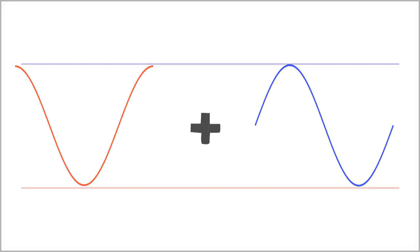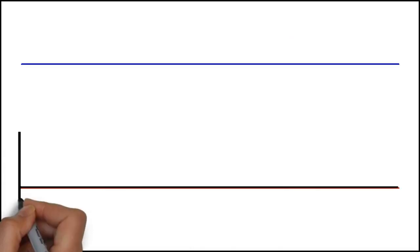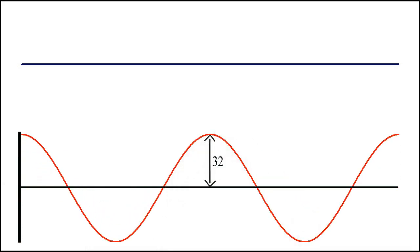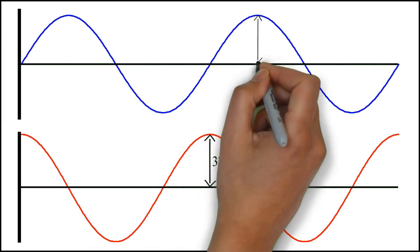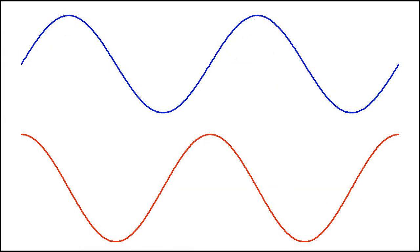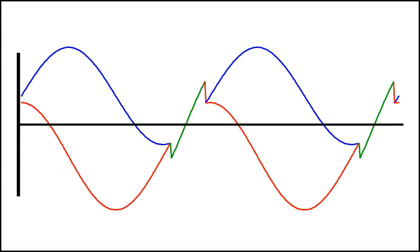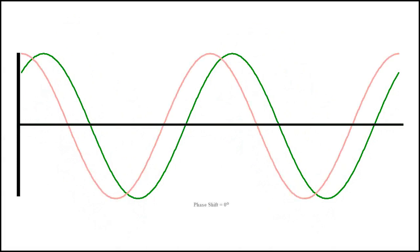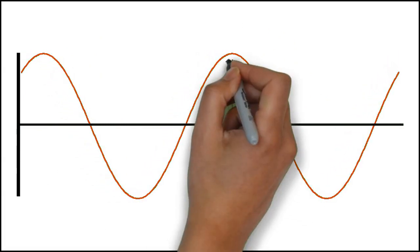Let's see this actually happen. I'm going to start with a cosine wave with an amplitude of 32. You can see that this cosine wave is just a normal cosine wave with no phase shift. Now I'm going to take a sine wave with an amplitude of 29. Again, the sine wave is not phase shifted at all. I'm now going to add them together. Look what happens to the resultant wave — it's a cosine wave that has been shifted by about 42 degrees. But what's its amplitude?